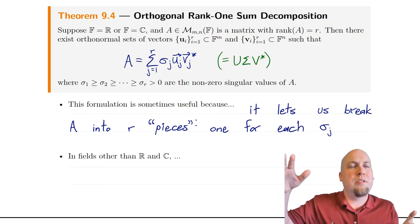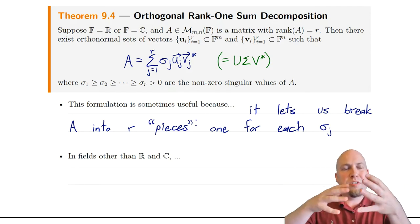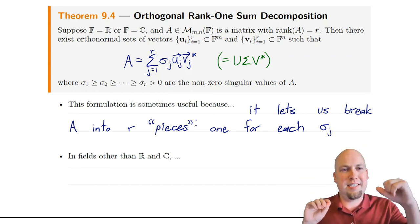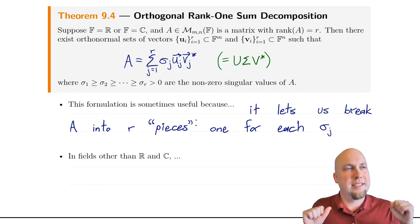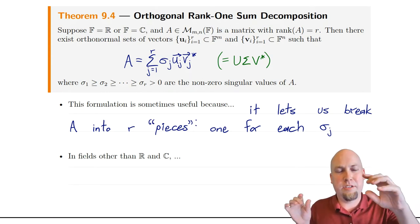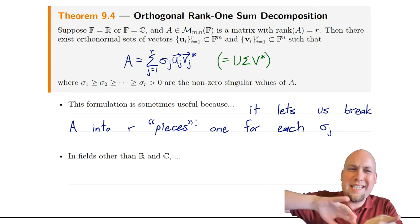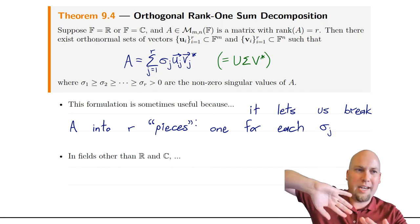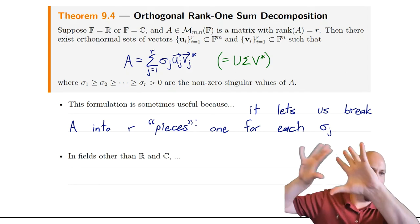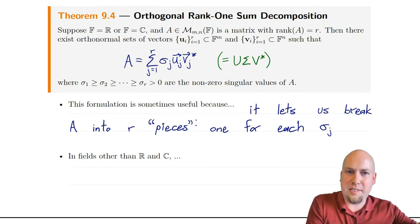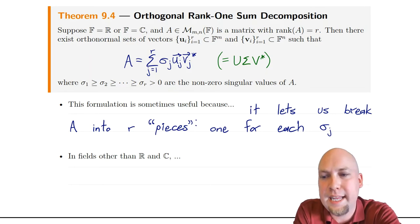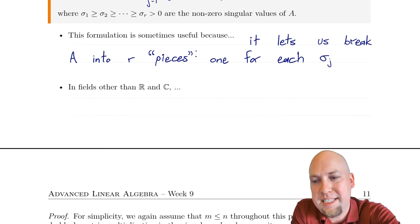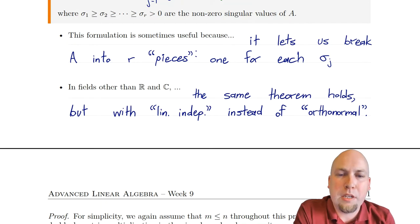Furthermore, the pieces are sort of organized: the largest singular value is the biggest piece of the matrix, and the second largest singular value is the second biggest piece, and so on. So it sort of breaks down the matrix into rank-1 pieces organized into most important and least important pieces. And we're going to come back to that idea next week and pin it down a little bit more precisely.